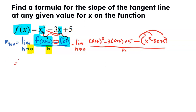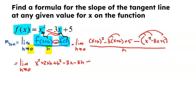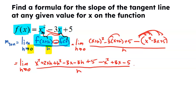Now I have a ton of algebra to do. The limit as H approaches 0 — order of operations says exponents first. That's going to be X squared plus 2XH plus H squared. Now I can distribute that negative 3: it's going to be negative 3X and negative 3H. Plus 5. Then I do have to distribute that negative sign back to all of that because I'm subtracting the entire function. So that's a negative X squared, a positive 3X, and a negative 5, all divided by H. Positive X squared and negative X squared cancel. Negative 3X and positive 3X cancel. Positive 5 and negative 5 cancel.